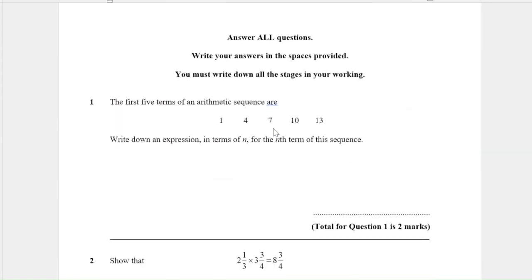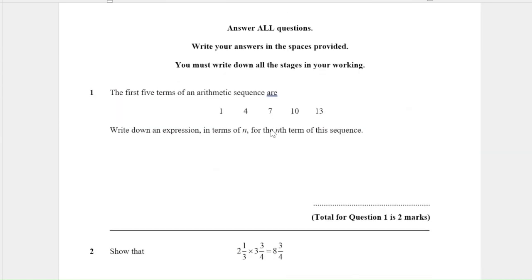Straight into question 1. Here are the first five terms of an arithmetic sequence. Write down an expression in terms of n for the nth term of the sequence. I never bother over-complicating these. I look at the common difference — we've got a common difference of 3, which means my sequence has got to have a 3n in it. Then I look at what I need to do to the number 3 to get to the number 1, and that's going to be minus 2.